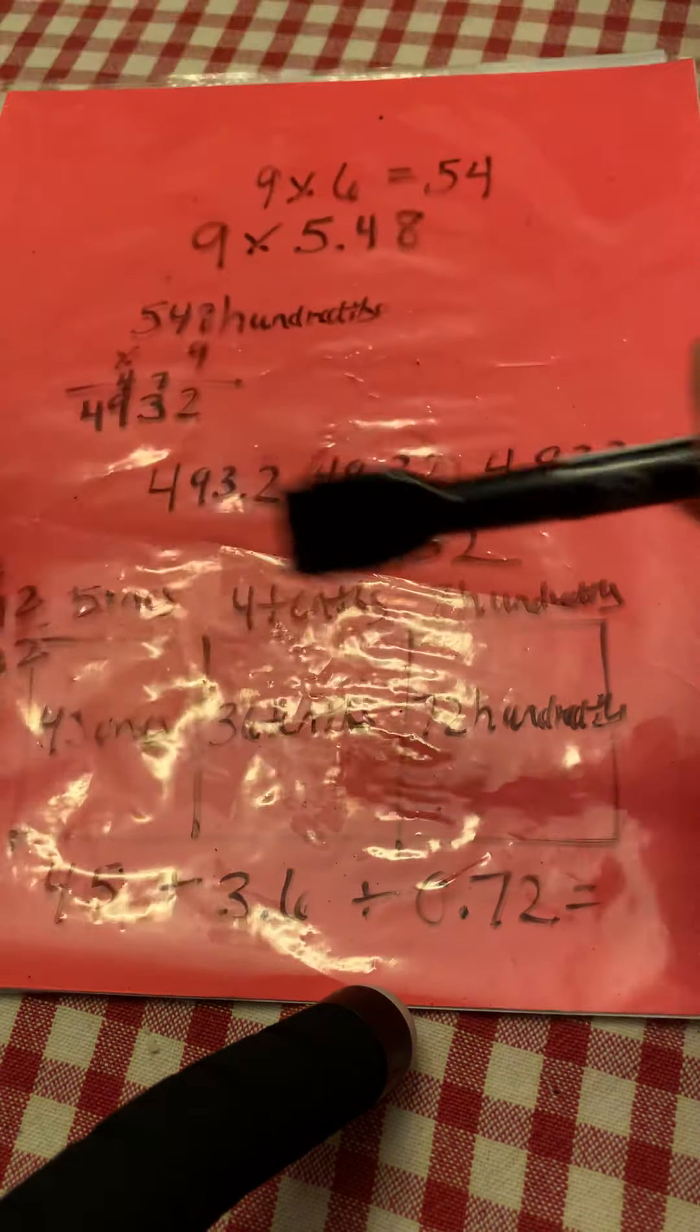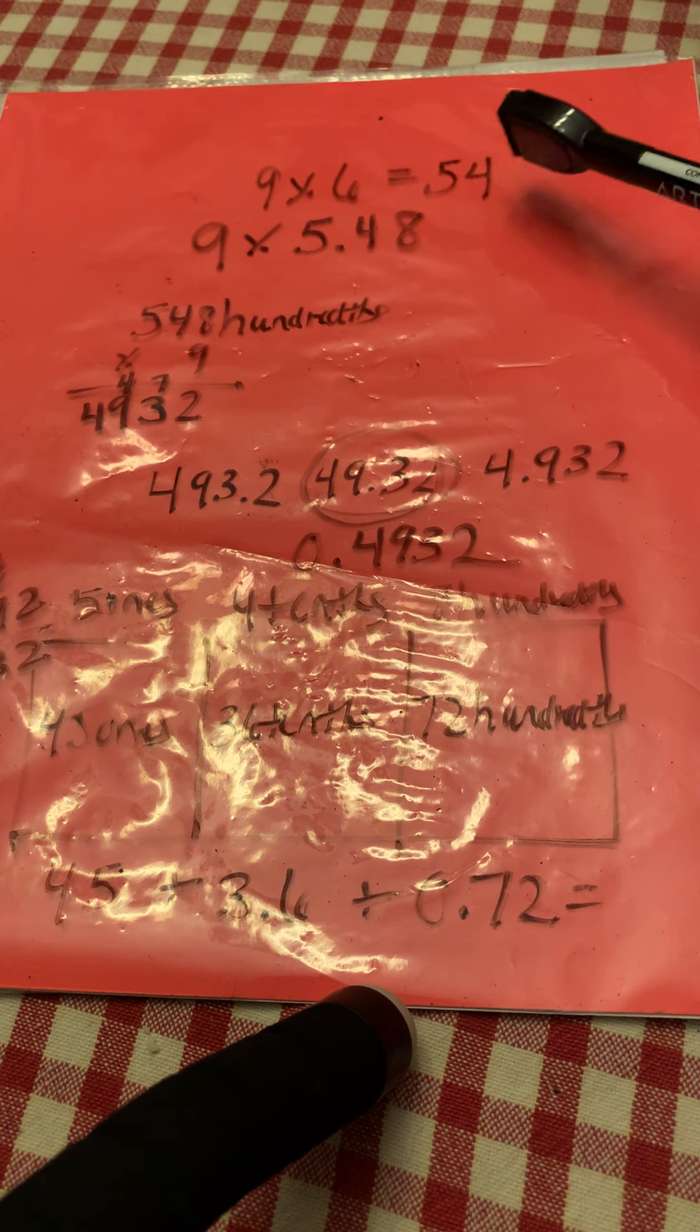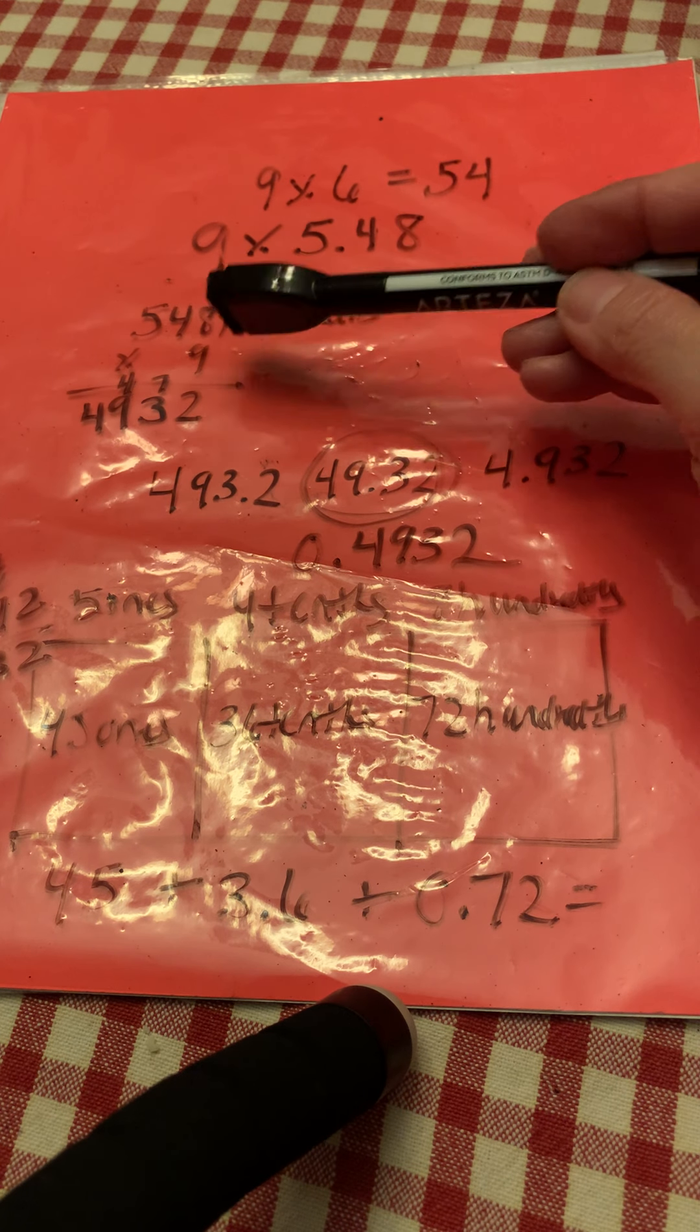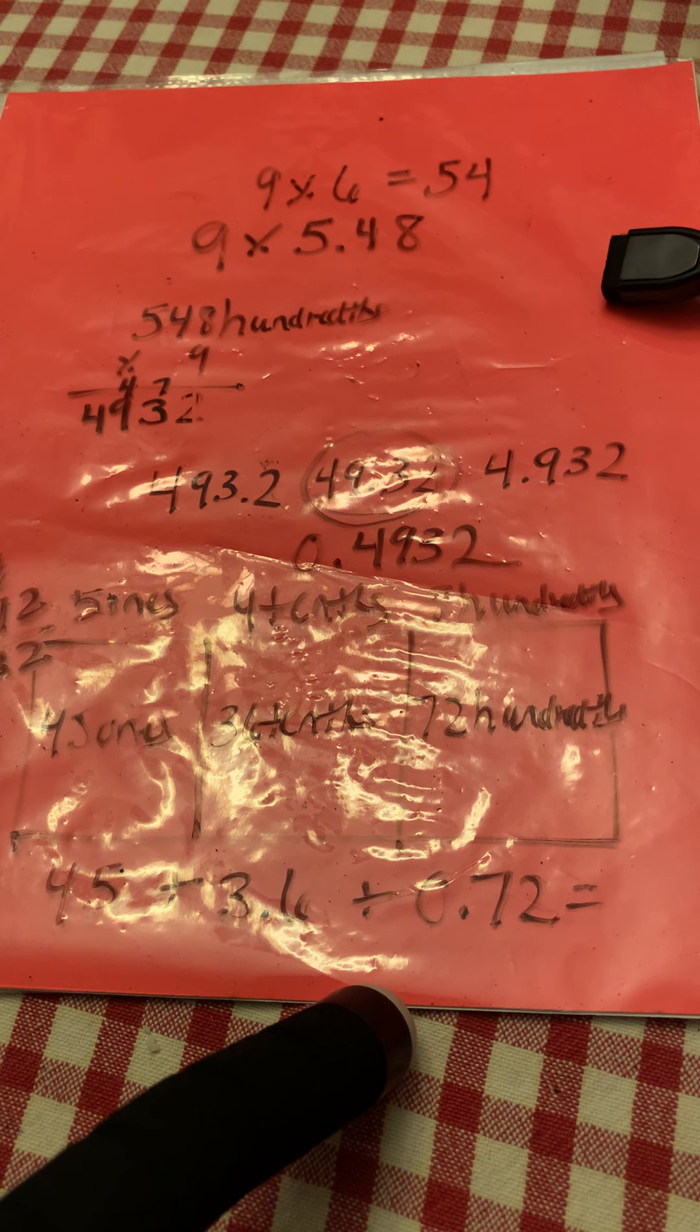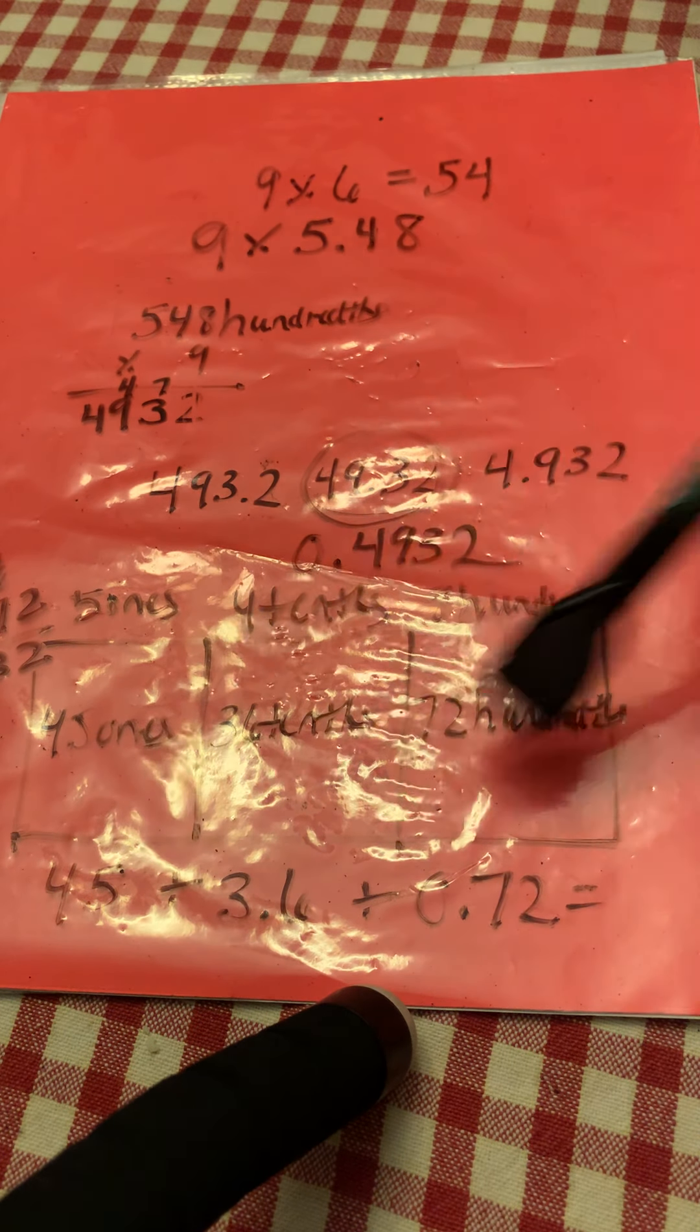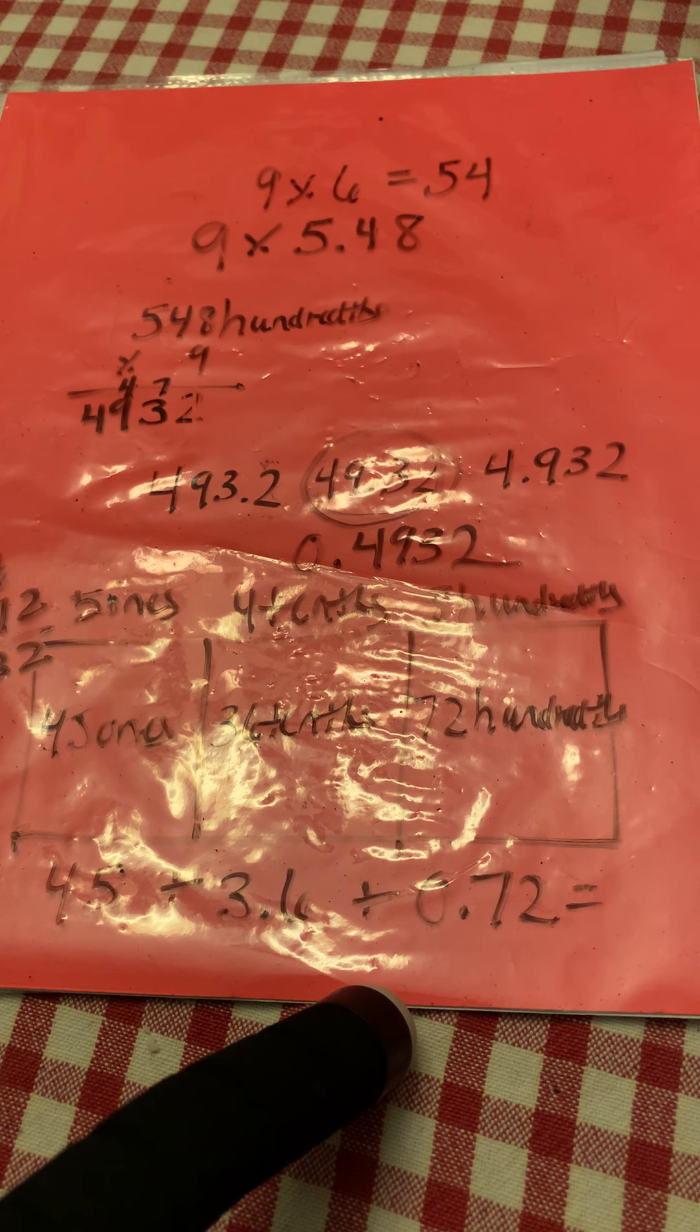All right, so to sum up today's lesson, it's multiplying decimals again, but we're using reasonableness strategy to help us use our vertical algorithm and then figure out where the decimal point would go based on figuring out what a reasonable answer is. We can also solve this using our area model. All right, good job today.